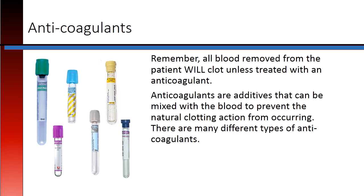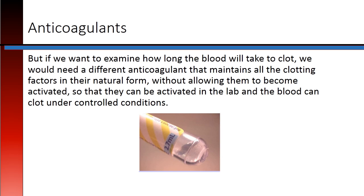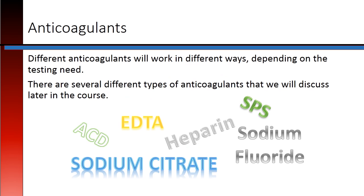Remember that all blood removed from a patient will clot unless treated with an anticoagulant. Anticoagulants are additives that can be mixed with the blood to prevent the natural clotting action from occurring. There are many different types of anticoagulants. The type of anticoagulant we use will depend on what the test is evaluating. If we want to look at red blood cells, we need an anticoagulant that maintains the blood in an environment where red blood cells can remain intact. But if we want to examine how long blood will take to clot, we would need a different anticoagulant that maintains all the clotting factors in their natural form without allowing them to become activated, so they can be activated in the lab under controlled conditions.